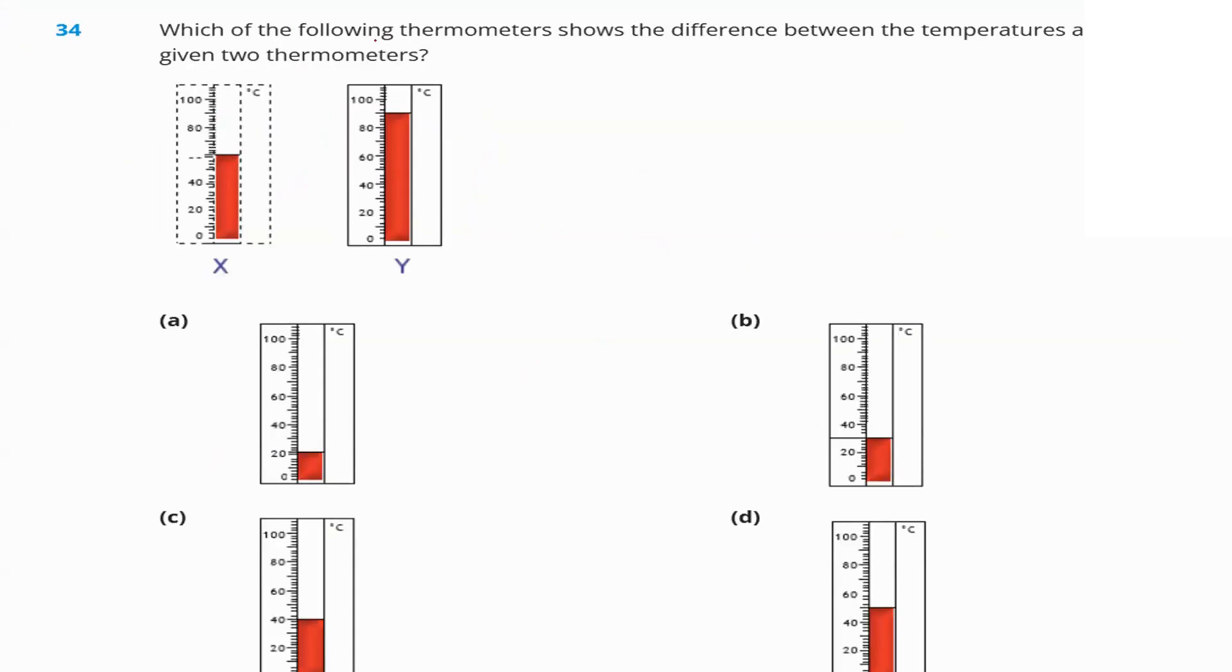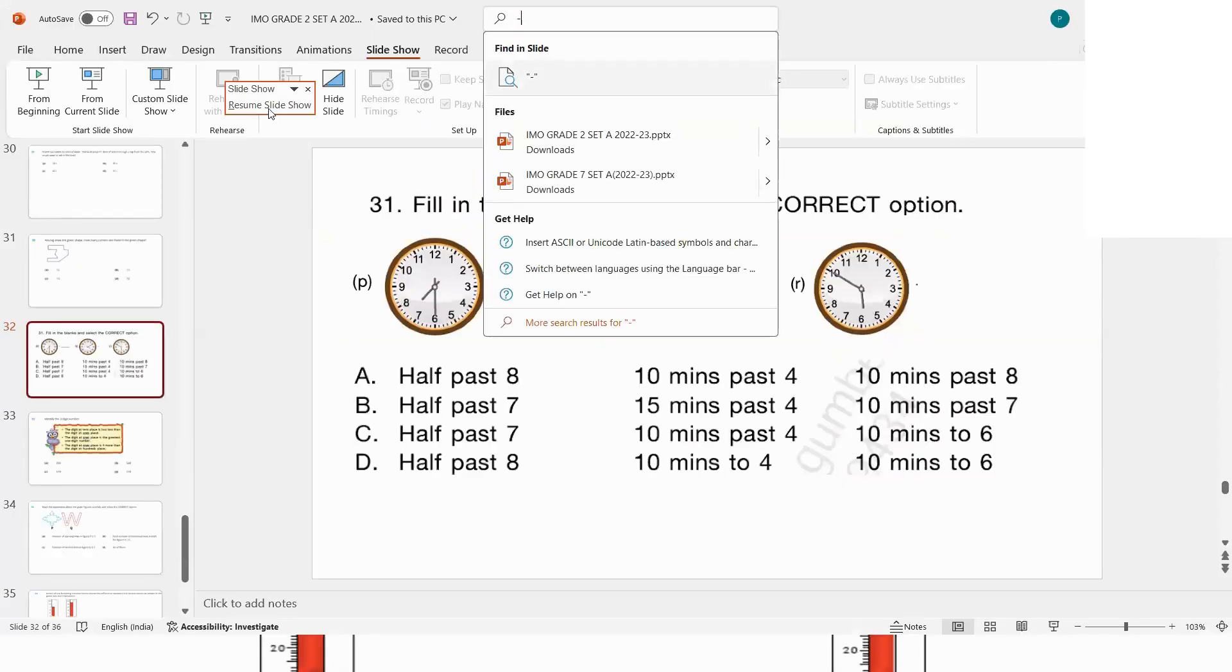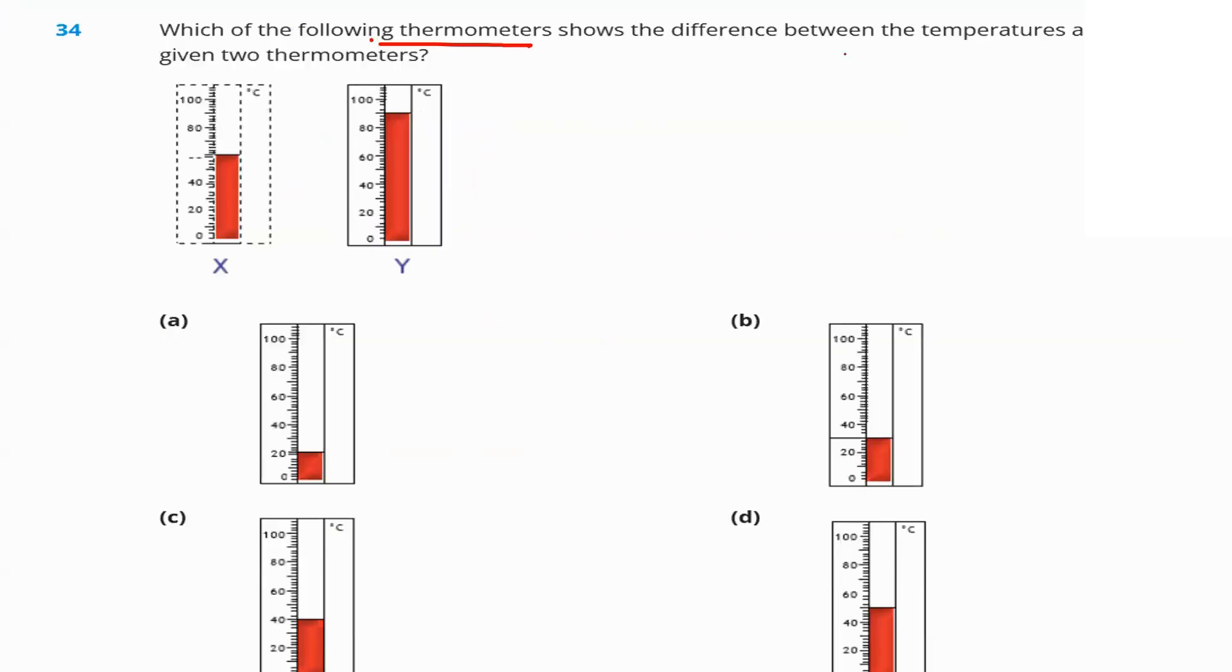Next, question number 34 wants you to find out which of the following thermometers shows the difference between the temperatures as shown in the given two thermometers. What's the temperature over here? Exactly between 40 and 80? That's 60. And what's the temperature over here? Between 100 and 80? That's 90. So, what's the difference among both the temperatures? 90 minus 60? That's 30. Where do you have it? Option B over here. Exactly between 20 and 40? That's 30. Option B as the answer.